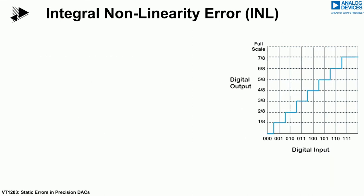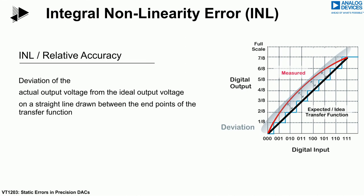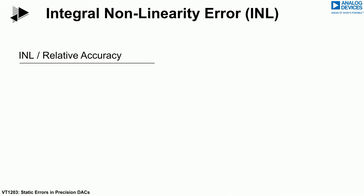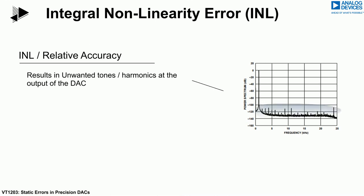The relative accuracy of a DAC is also known as integral non-linearity, or INL. INL is the deviation of the actual transfer function from the expected straight-line transfer function of the DAC. INL results in the addition of unwanted harmonics and spurs, or tones, at the output of the DAC.